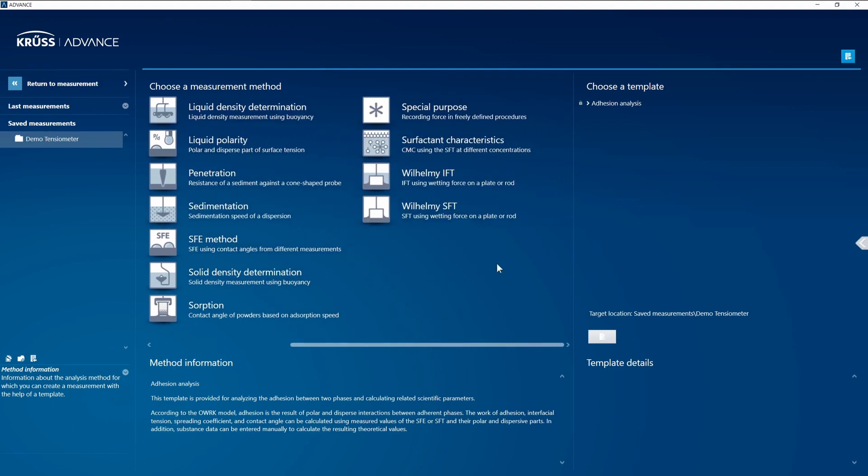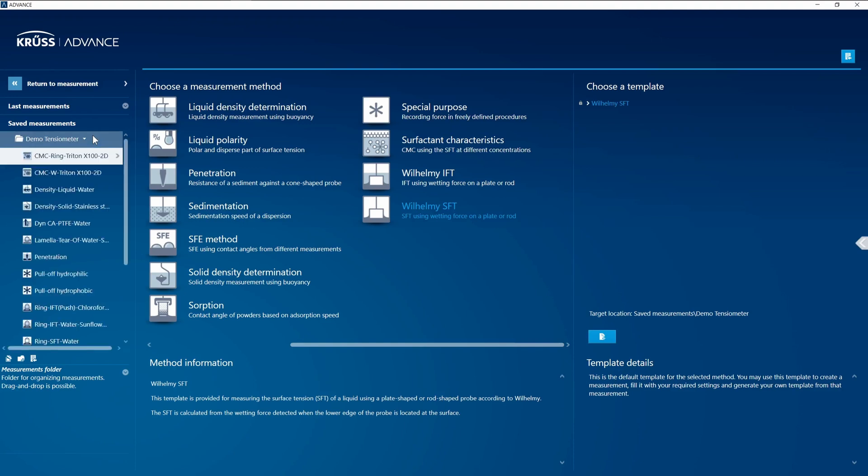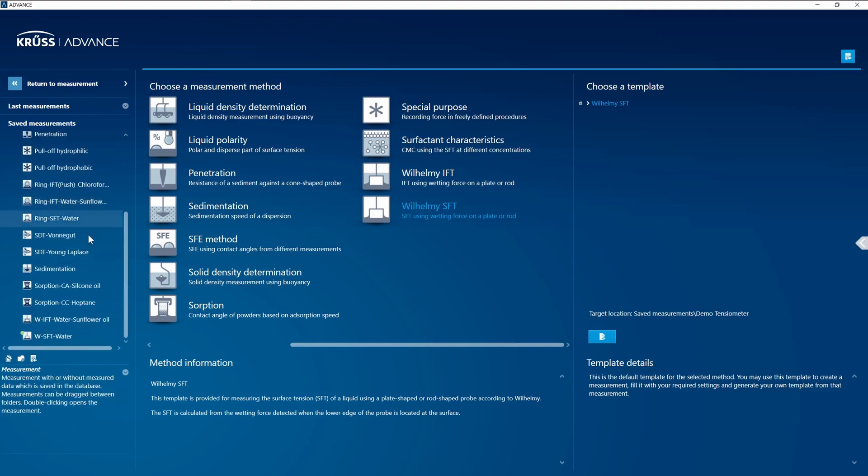In this case I want to look at doing a surface tension measurement, so I can click here, and I could open using a new template from this. This is just the standard template that Advance comes with. In this case I'd like to actually open an older measurement, so I'm going to go back into my folder here and down to a measurement I already made.